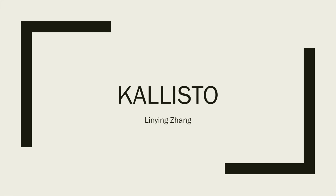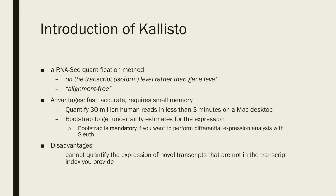CLISTO is a program for quantifying abundances of transcripts from RNA-seq data. The two most important differences between CLISTO and other quantification methods are that CLISTO quantifies on the transcript isoform level rather than the gene level, and also it is an alignment-free method, meaning it determines the compatibility of reads with targets without the need for alignment.